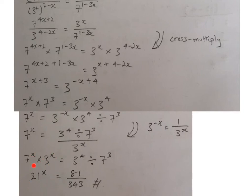And later, you can see that it's actually 21 to the power of x. And over here, I have 3 to the power of 4 divided by 7 cubed. Use your calculator and you will be able to get 81 divided by 343.